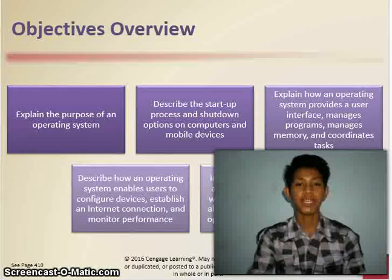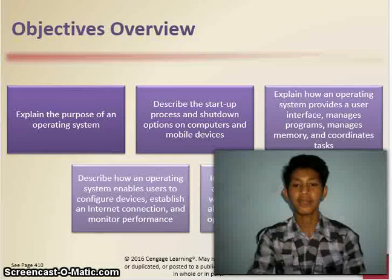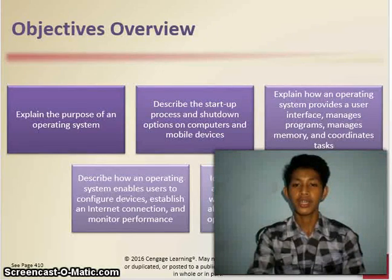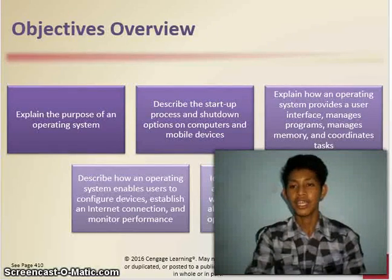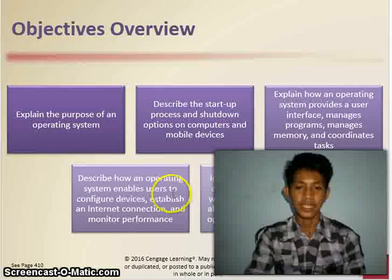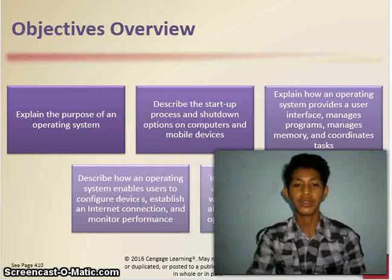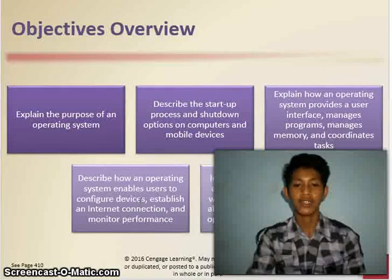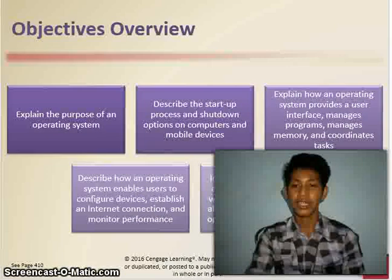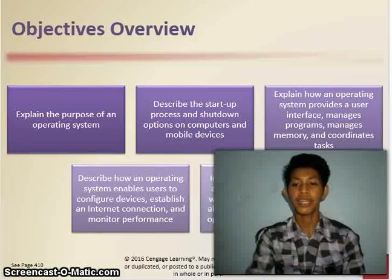Objectives Overview: explain the purpose of an operating system; describe the start-up process and shutdown options of computers and mobile devices; explain how an operating system provides a user interface, manages programs, manages memory, and coordinates tasks; describe how an operating system enables users to configure devices; establish an internet connection; and monitor performance; identify file management and other tools included with an operating system.